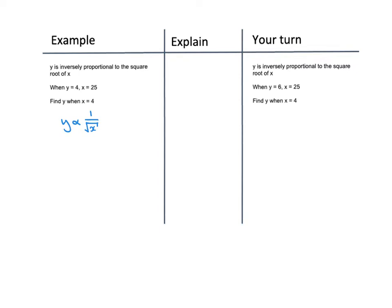Here you can see a statement — not a formula at the moment, just a statement using this sort of fish-like notation, which means proportional. Y is proportional to 1 over the square root of X. In other words, Y is proportional to the inverse of the square root of X. Now we write this as a formula by introducing the constant K.